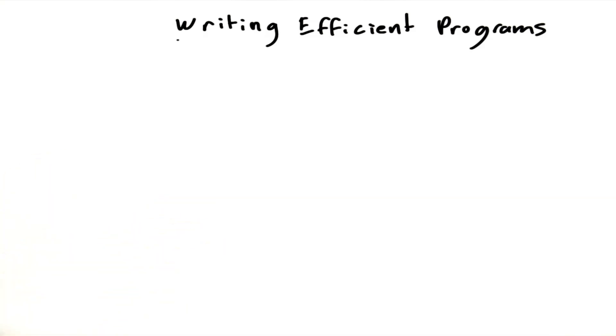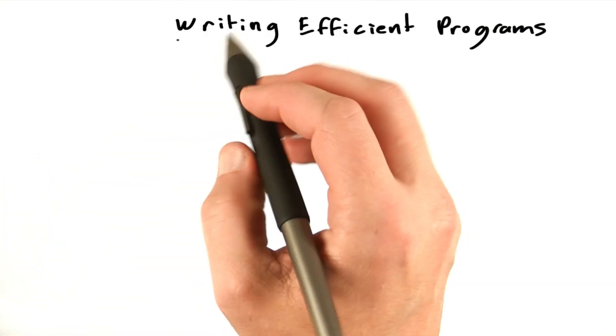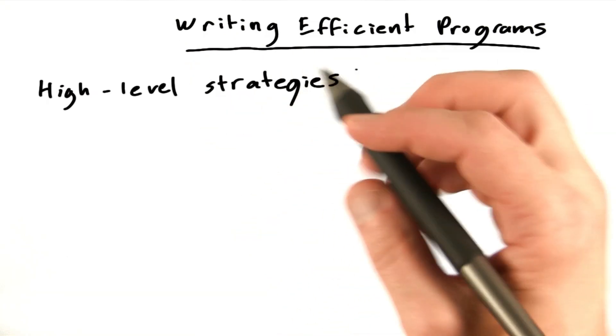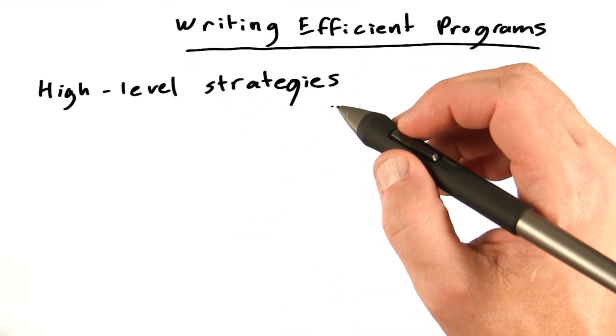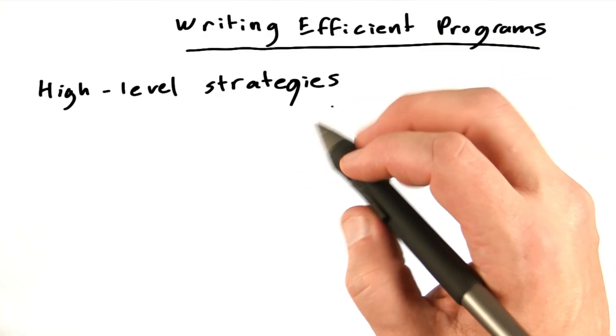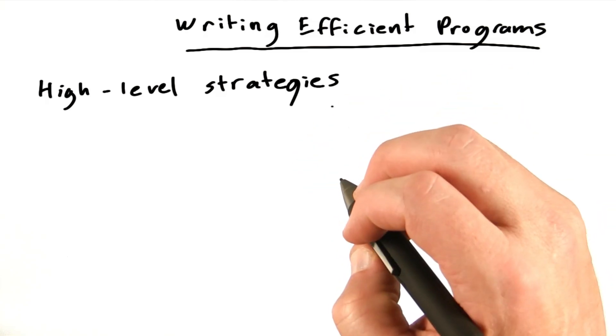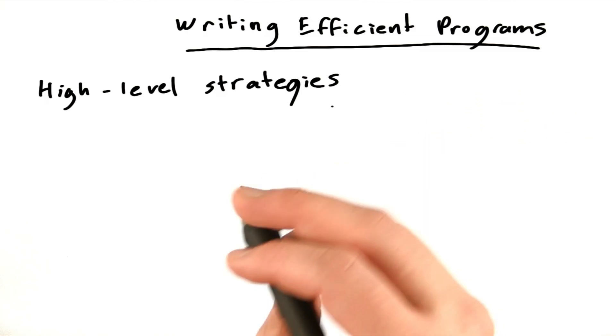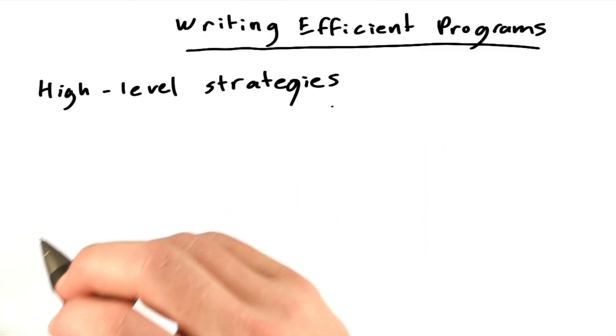Now we have all the ingredients to start talking about writing efficient parallel programs in CUDA. For now I'm only going to talk about high level strategies. We're going to have a whole unit later on about detailed optimization approaches to help you really squeeze the maximum performance out of the GPU. So think of this as a preview that covers some of the really important high level things you have to keep in mind when you're writing a GPU program.